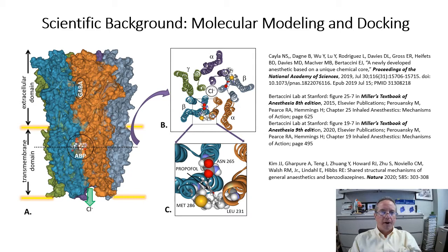So we started with this model of the gamma-aminobutyric acid receptor that we had built through our validated methods of molecular and homology modeling, which has now advanced to a nearly identical structure identified through cryo-electron microscopy. This model of the ligand-gated ion channel is composed of a pentamer of subunits symmetrically arranged around the central ion pore, shown here in panel B.